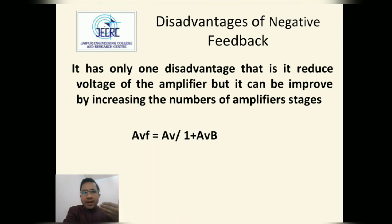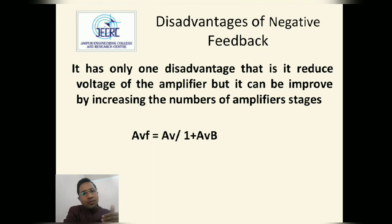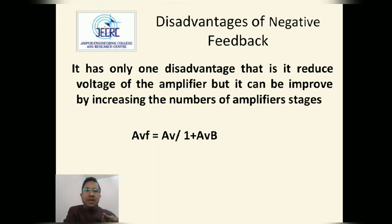There is only one disadvantage of negative feedback: it reduces voltage gain. But it can be improved by increasing the number of amplifier stages. The voltage gain with feedback is given by the equation: Avf = Av / (1 + Av·β), where Avf is the voltage gain with feedback, Av is the voltage gain without feedback, and β is the feedback fraction. The factor (1 + Av·β) is called the desensitivity factor D.